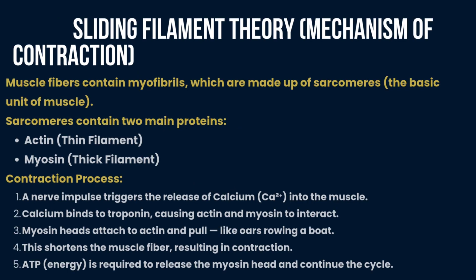The sliding filament theory explains the mechanism of contraction. Muscle fibers contain myofibrils, which are made up of sarcomeres — the basic unit of muscle. Sarcomeres contain two types of protein: actin, called the thin filament, and myosin, called the thick filament. A nerve impulse triggers the release of calcium into the muscle to initiate contraction.